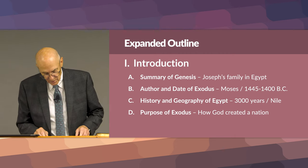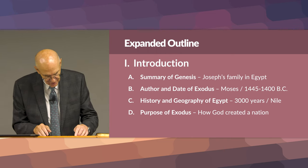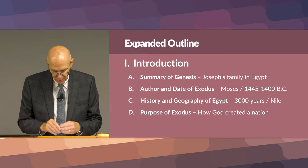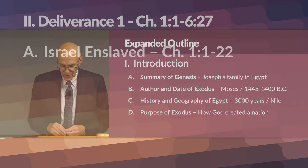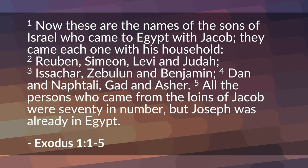Now that our outline has been laid out and we've had a brief review of the introduction, it's time to look into the text of the book of Exodus itself and move into part two of our outline, which is entitled Deliverance — Deliverance number one, chapter one verse one to chapter six verse 27. The first part of that is Israel enslaved. We'll read chapter one, verses one to seven.